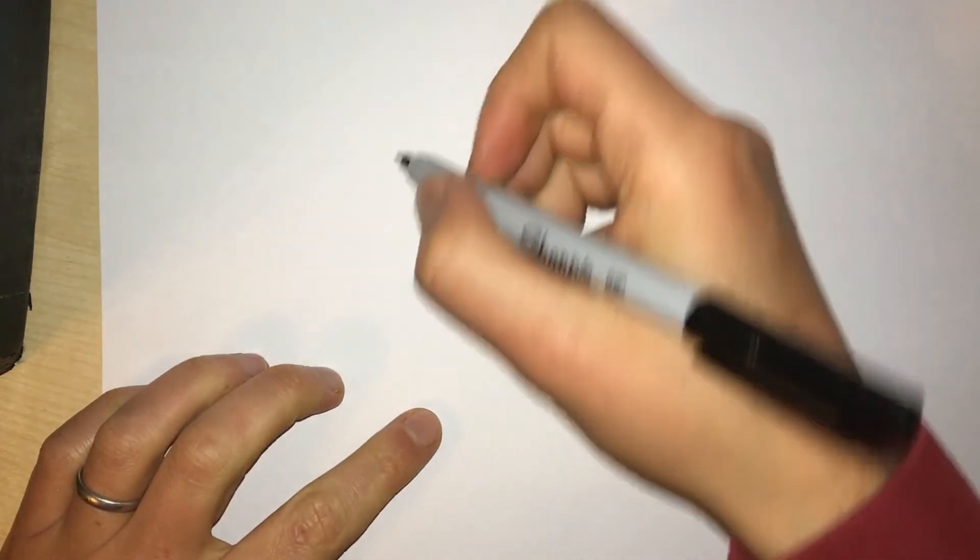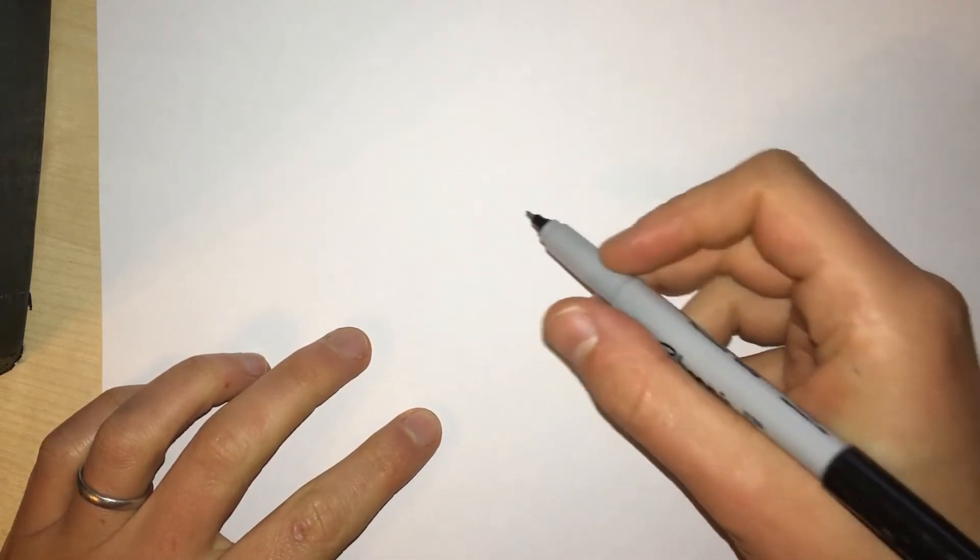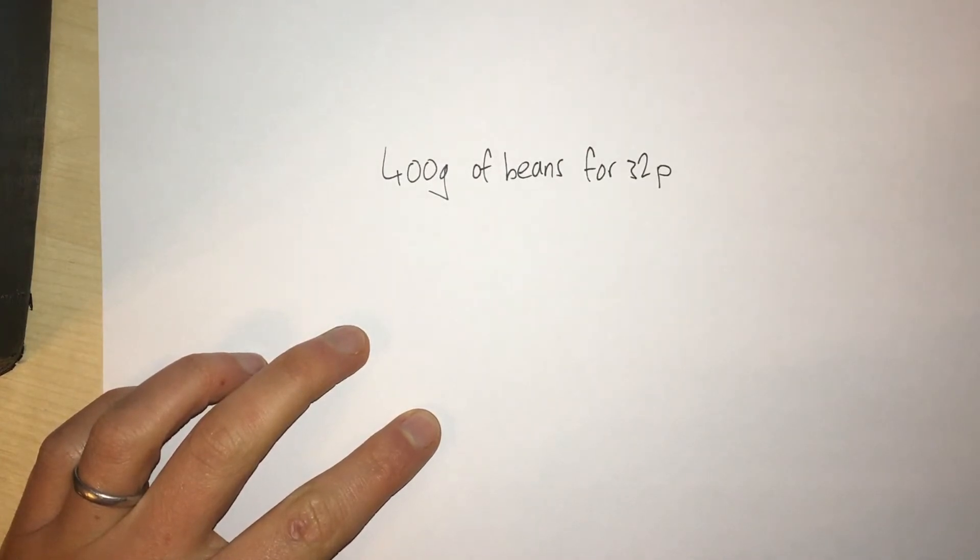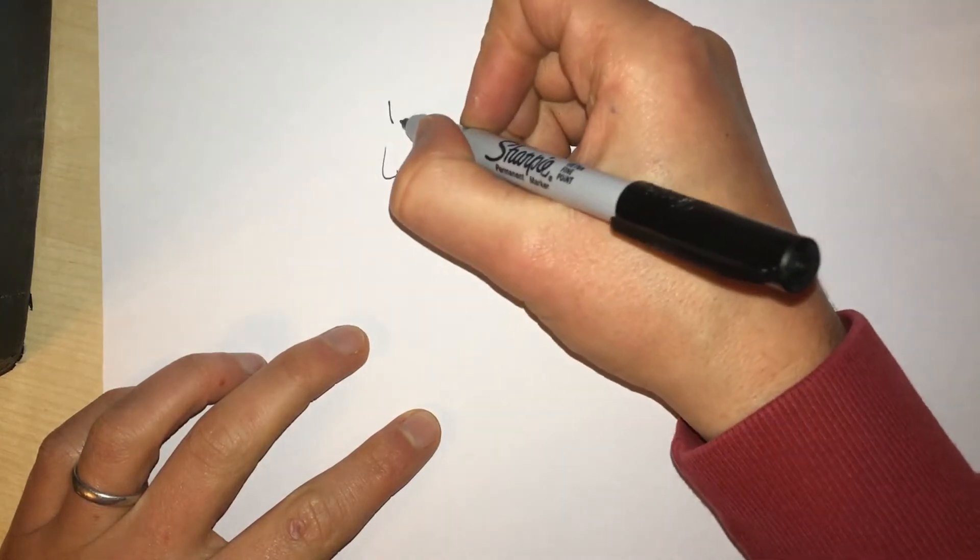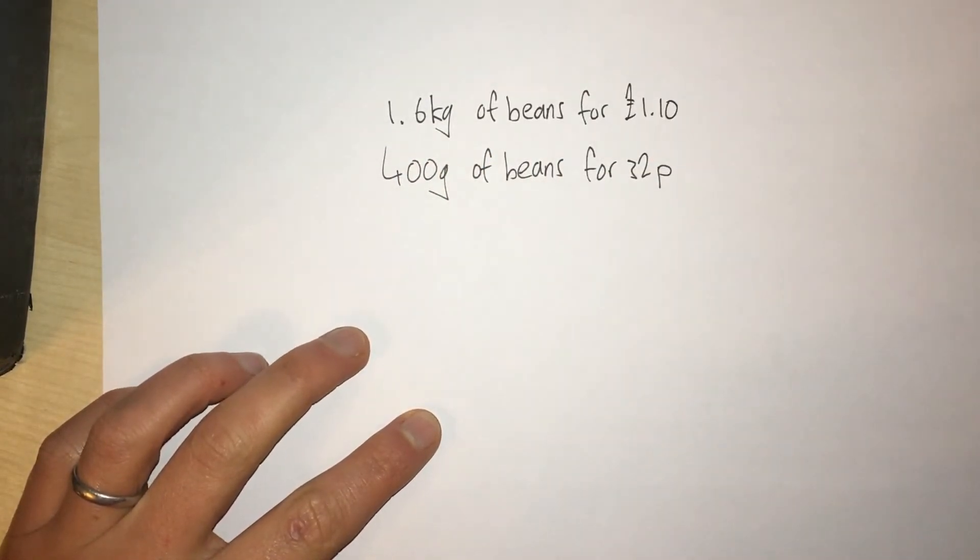One tin weighs 400 grams. The four tins, well they weigh 1600 grams or 1.6 kilograms. And three tins of beans for 80p, well that's 1200 grams.